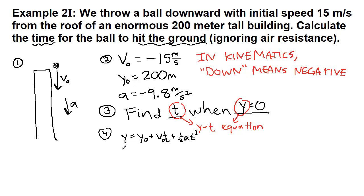So we have y equals y naught plus v naught t plus 1 half at squared. Okay, now we start to plug in numbers. Our final y is 0, our initial y is 200, plus a negative 15 times t, plus 1 half times negative 9.8 times t squared.